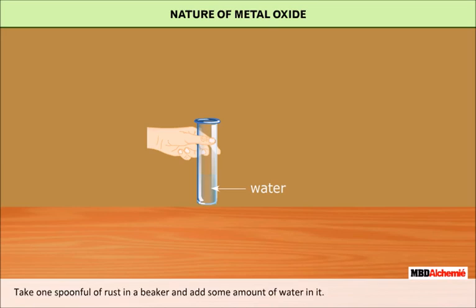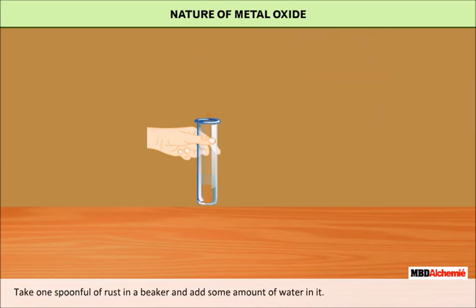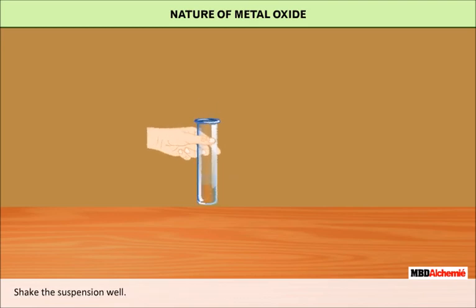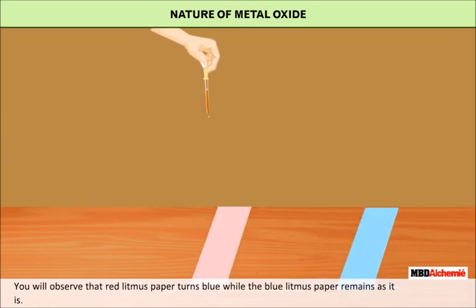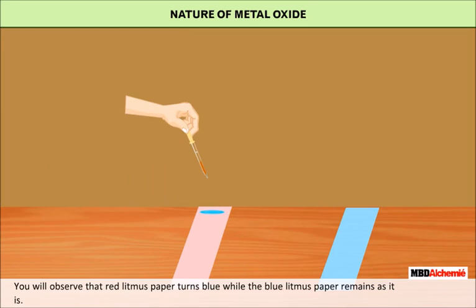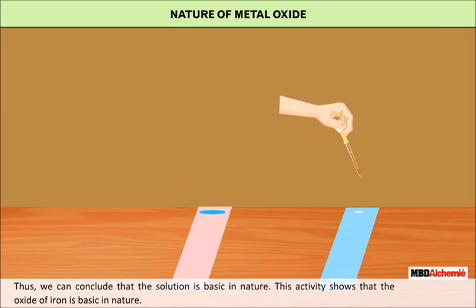Nature of metal oxide: Take one spoonful of rust in a beaker and add some water to it. You will observe that the rust remains suspended in water. Shake the suspension well. Now test the solution with red and blue litmus paper. You will observe that the red litmus paper turns blue while the blue litmus paper remains as it is. Thus, we can conclude that the solution is basic in nature. This activity shows that the oxide of iron is basic in nature.